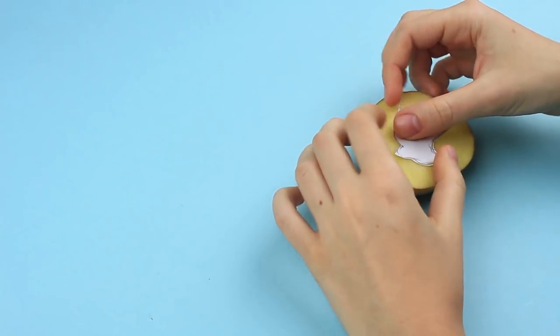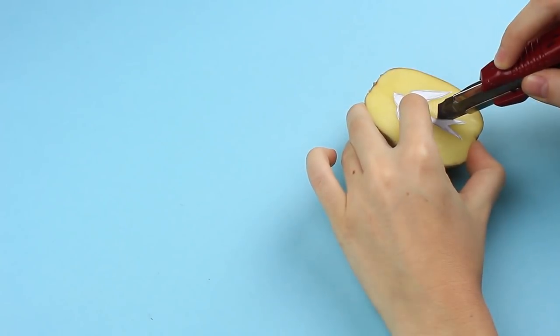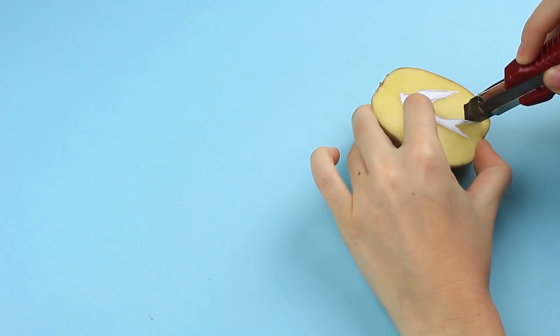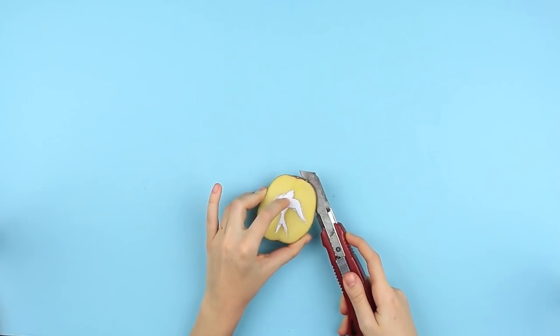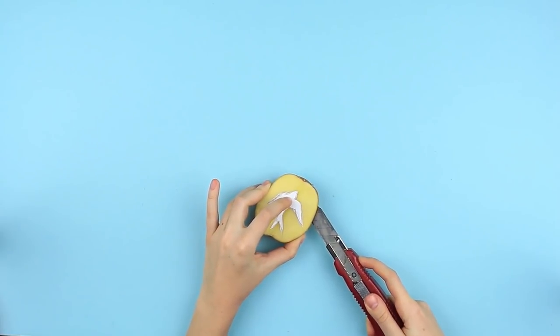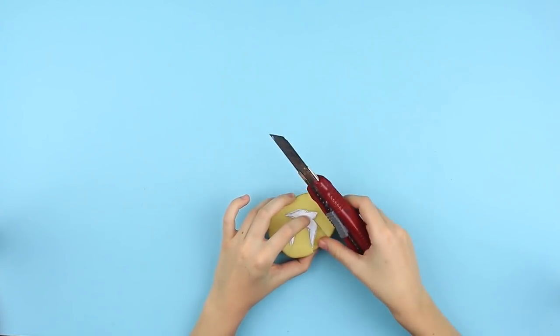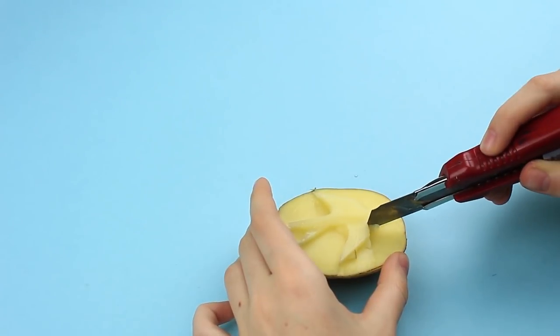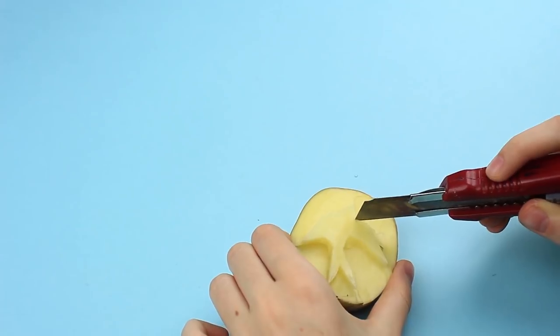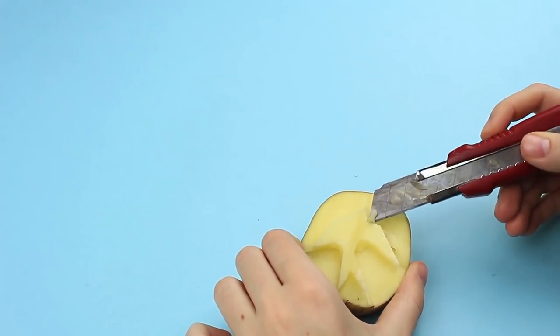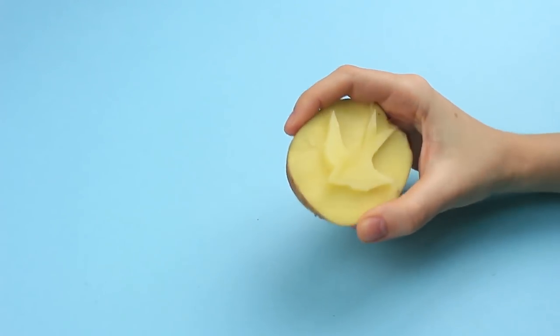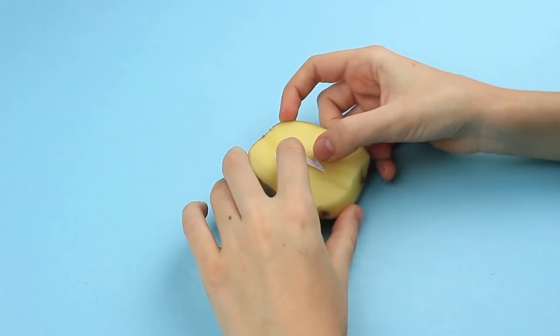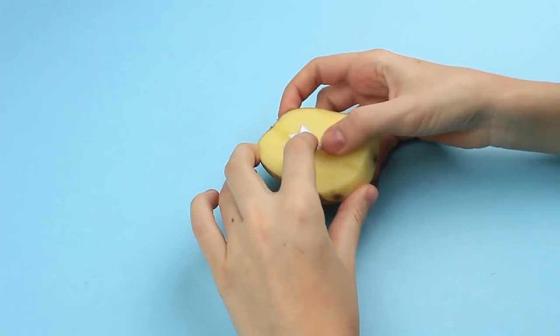Place the pattern on the half. Carefully cut out the image. Make side cuts to remove the excess potato layers. Take the pattern off. We don't need it anymore. Correct the shape. The swallow stamp is ready. Let's make the floral one. Follow the same steps.